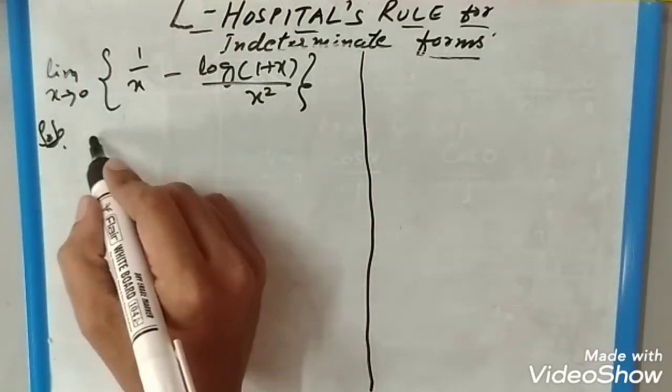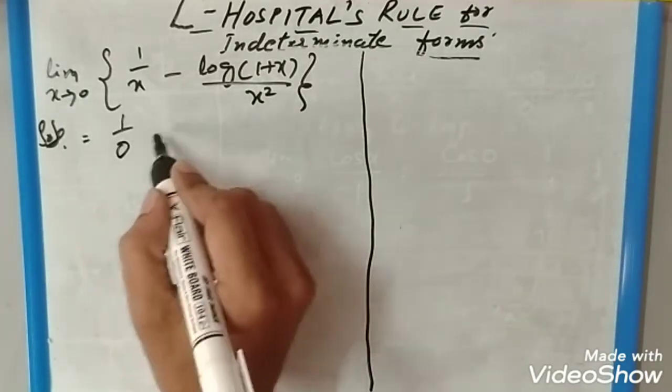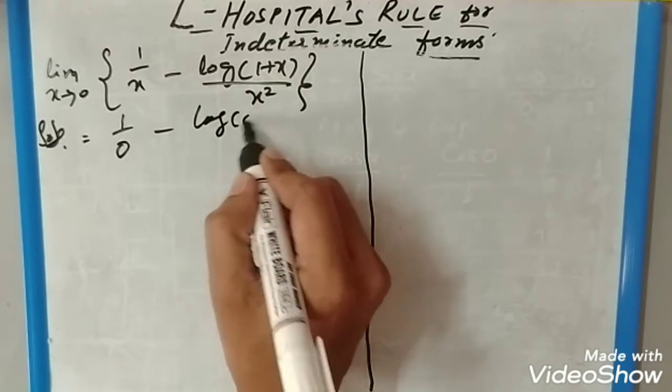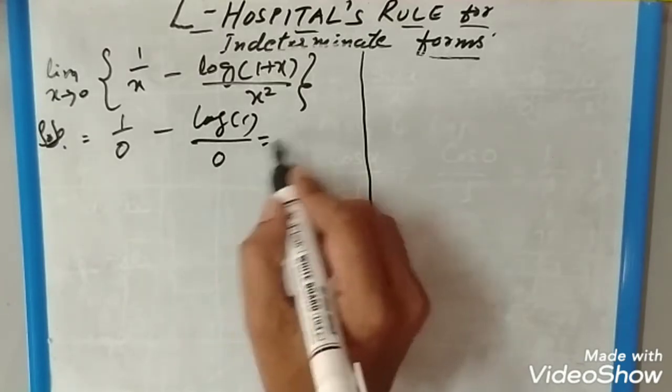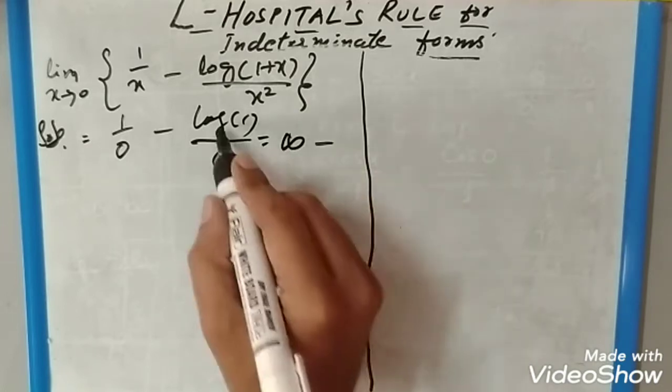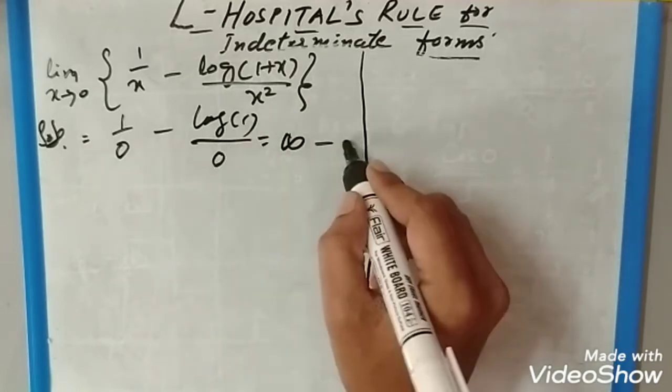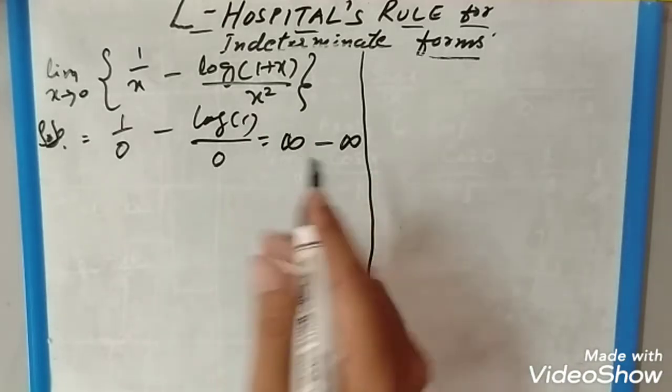Let us substitute the limit x tends to 0. In this case it will become 1/0, log of 1 divided by 0, which is nothing but infinity minus infinity. Log 1 is 0, 1/0 is infinity, so infinity minus infinity form.